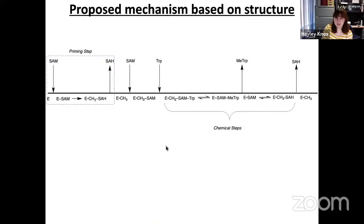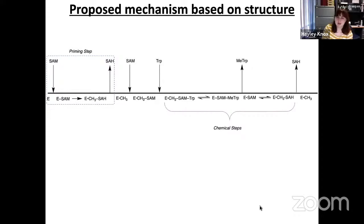At this point, it seems clear that there are two major steps in the methylation by TSRM: a priming step and a chemical step. In the priming step, enzyme and SAM bind forming an enzyme-SAM complex; SAM transfers the methyl group, producing methylated enzyme, and SAH leaves. In the chemical step, the methylated enzyme binds SAM and tryptophan, forming a methylated-enzyme–SAM–tryptophan complex. The methyl group transfers from the enzyme to tryptophan; methyltrip leaves, leaving enzyme and SAM. SAM then methylates the enzyme again, SAH leaves, regenerating methylated enzyme.